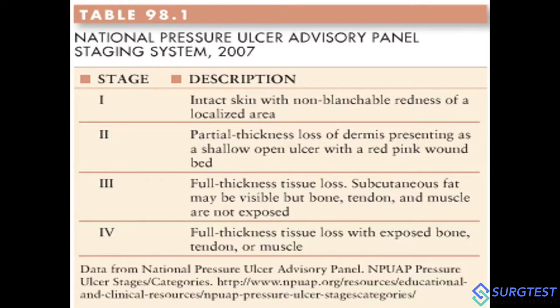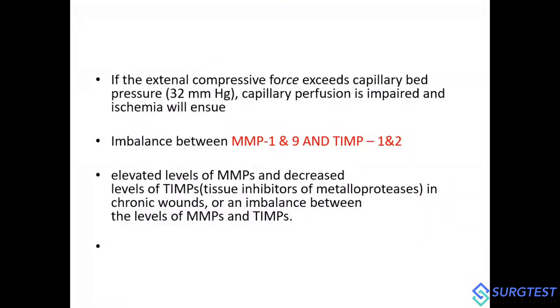The fourth stage is full thickness tissue loss in which bone, tendon, or muscle is exposed. Regarding the external compressive force, the pressure required to create a pressure injury is 32 mmHg — this is the capillary bed pressure at which capillary perfusion is impaired and ischemia ensues.